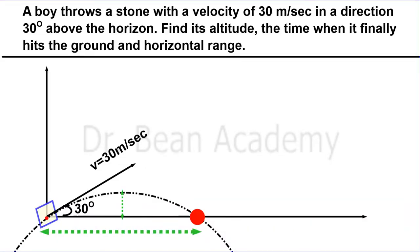Here we have a question related to projectile motion. A boy throws a stone with a velocity of 30 meters per second in a direction 30 degrees above the horizon. Find its altitude, the time when it finally hits the ground, and horizontal range.